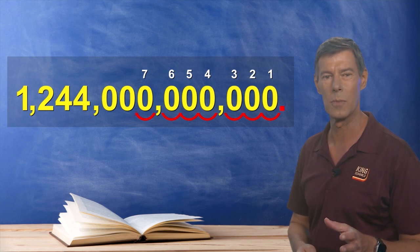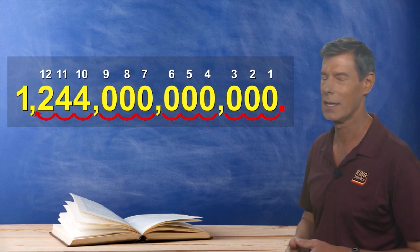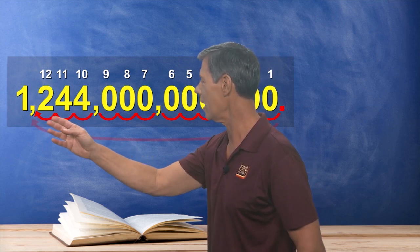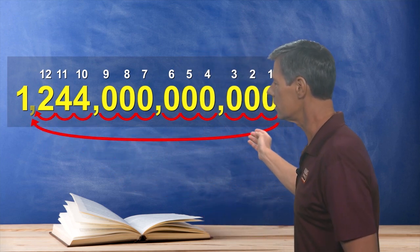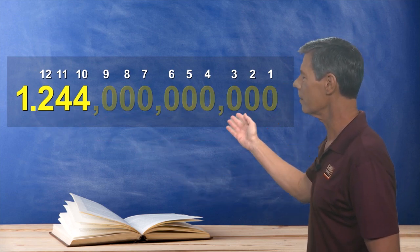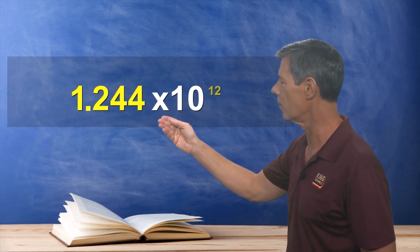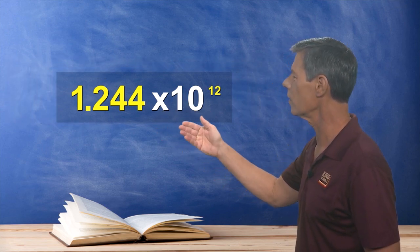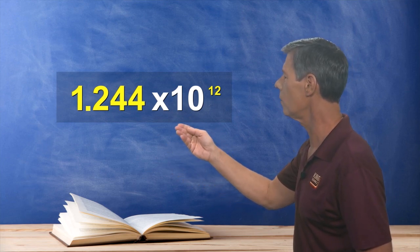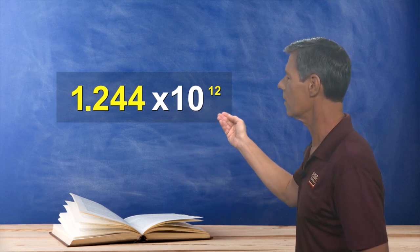Now to convert this massive number into scientific notation, you just move the decimal point to be between the first and the second digits. In this case, the one and the two right here. And count how many places it took in order to move it there. So this number represented in scientific notation as 1.244. And since the decimal point was moved 12 places to the left to get there, it'll be 1.244 times 10 to the power of 12.